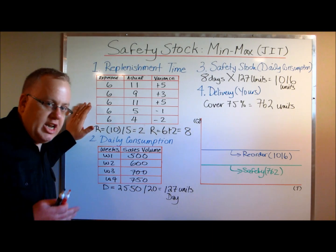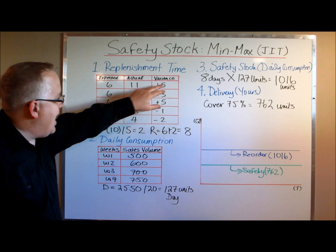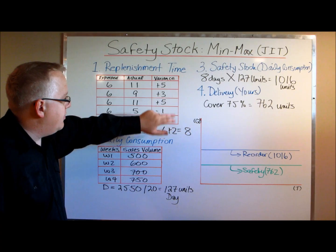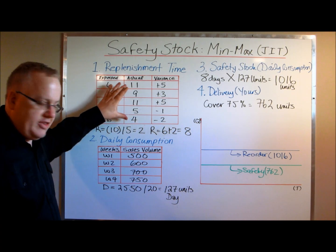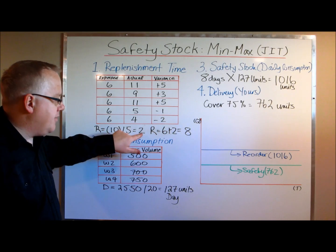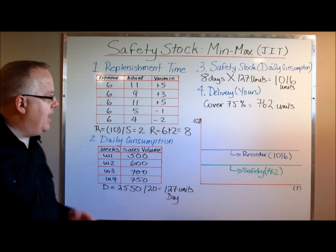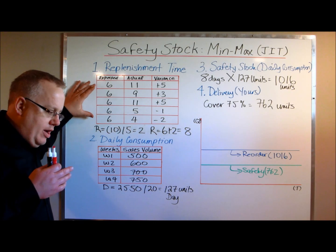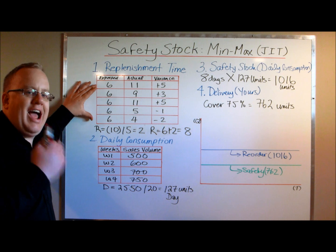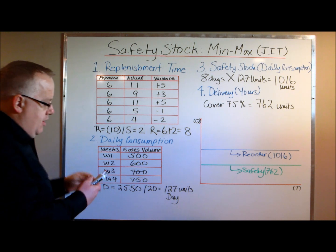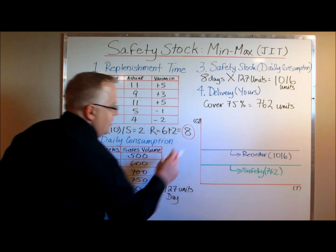We want to determine the replenishment time and account for the variances. We add up the variances: five plus three is eight, plus five is thirteen, minus three is ten, divided by the sample size of five, which gives us two. So we add two to our expected replenishment time. The more shipments you analyze and the more often you do this, the more accurate your variance will be. In this case, we arrive at a replenishment time of eight days.